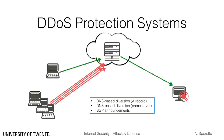For example, if the target is a web server of an organization, diversion can be achieved by setting the A record for the target website to an IP address in the network of the DDoS protection system. In this case, the DDoS protection system acts like a content delivery network, serving the protected website and at the same time absorbing the malicious traffic. Alternatively, the target organization can start using the name server of the DDoS protection system, which means the DDoS protection system has the freedom of changing the IP addresses of the protected domain to an IP under its control. Last, the DDoS protection system can implement BGP-based diversion by temporarily announcing the address space of the target and therefore capturing its traffic.